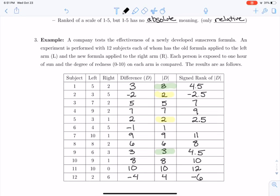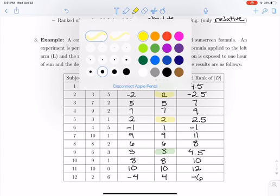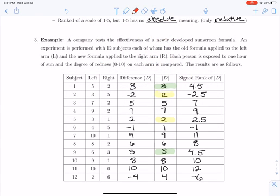And then finally the smallest difference is 1 and that gets a ranking of 1. Now notice that I've put negative signs in front of the rankings for the negative differences. So here we can see there's a negative sign for subject 2 because there's a negative difference there. There's a negative sign for subject 6 because there's a negative difference there. And there's a negative sign for subject 12 because there's a negative difference there.